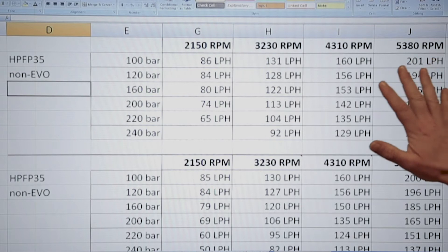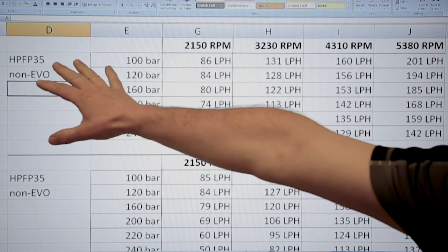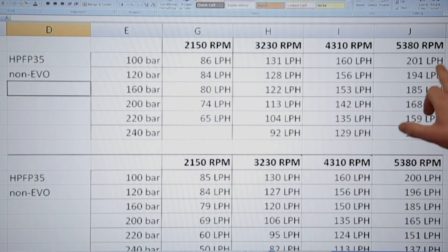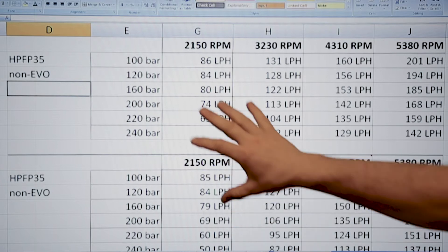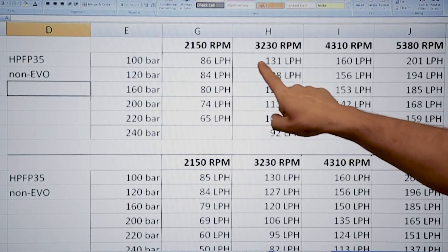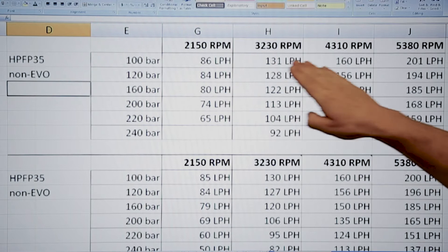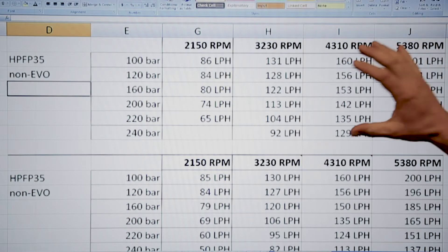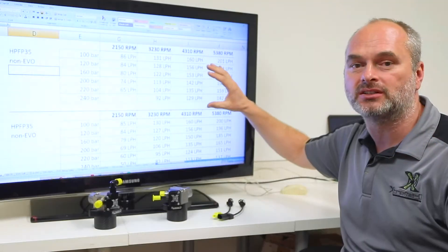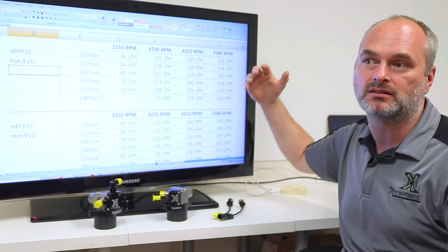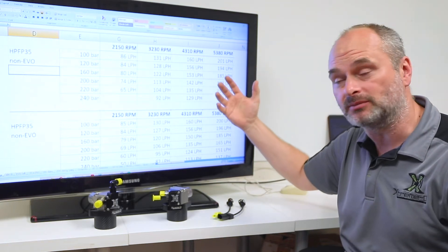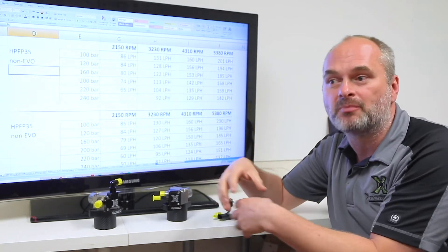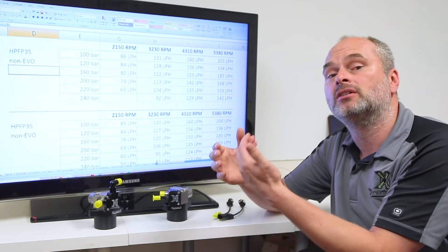So this is an example of a whole mapping, in this case it's our standard HPFP 35 and we did all our RPMs, we did 100 bar to 240 bar and you see how the output in liters per hour increases with RPM but it also decreases with pressure. So what that means is the higher pressure you run the lower the output gets and that's an efficiency problem. You have to consider a high pressure fuel pump like an engine, it has a displacement but it also has an efficiency and the efficiency goes down with pressure.